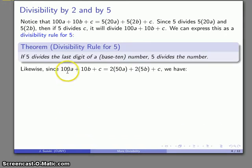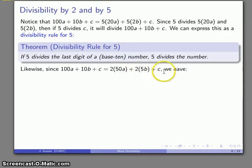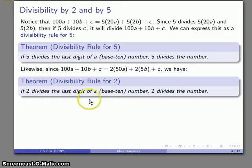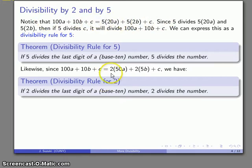Analogously, if we rewrite 100A + 10B + C as 2 times something plus 2 times something plus C, then 2 divides the first two terms. If 2 divides the last digit C, then 2 is going to divide the number. Again, this only works in base 10, because the reason we can make this statement goes back to the fact that our three-digit number ABC can be broken apart into something divisible by 5 or divisible by 2. These divisibility rules are always base-related.